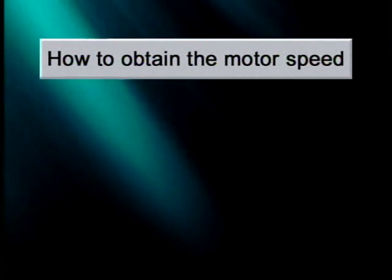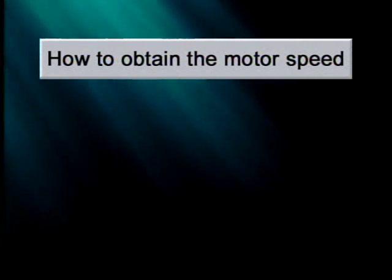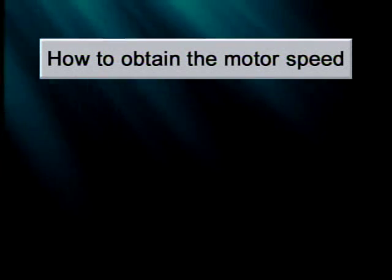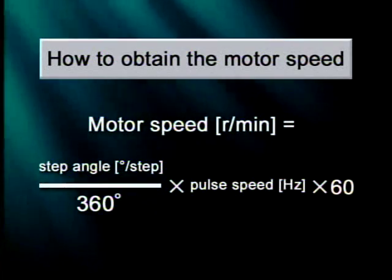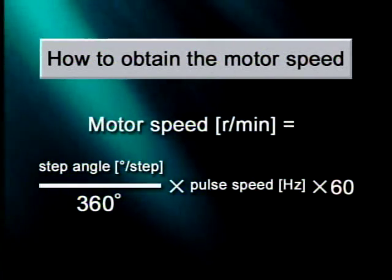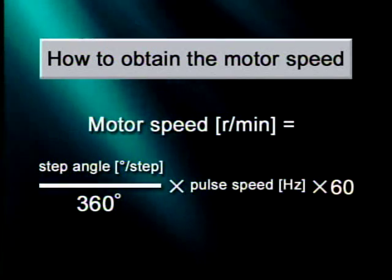You obtain the motor speed with the following formula. Motor speed in revolutions per minute equals step angle divided by 360 degrees times pulse speed times 60.